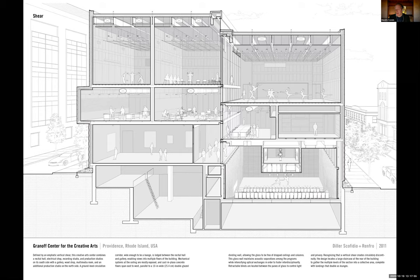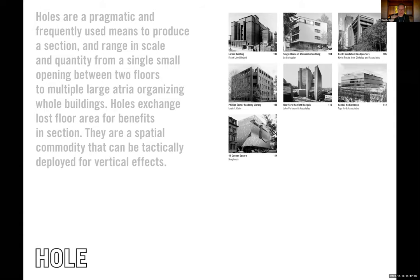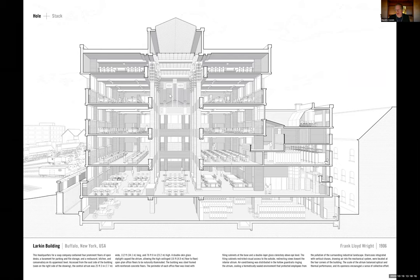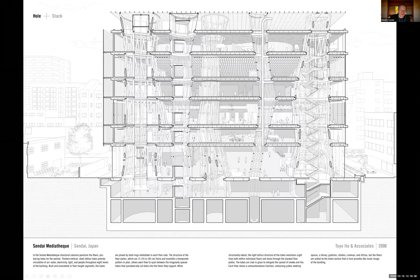Hole is a second-order operation — it needs enough stacking to then produce a void. The Larkin Building is a great example, with a massive hole turning work into a celebration, including an organ at the top so that music started the morning. Others use literal holes, as in Toyo Ito's structural lattice of holes pulling through the building to allow air circulation, vertical circulation, mechanical systems, egress, and structural stabilization.